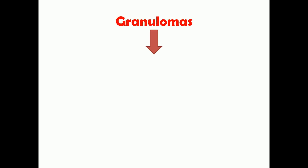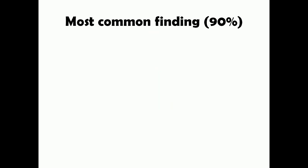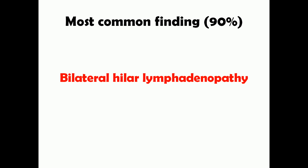Multiple granulomas coalesce together to form consolidation, which enlarges to form nodules about one to two centimeters in size that are palpable. These nodules are most commonly seen in the lungs, liver, and spleen. The most common finding in about 90 percent of sarcoidosis cases is bilateral hilar lymphadenopathy — enlargement of the lymph nodes present around the lungs.